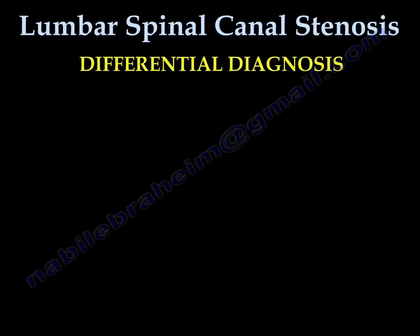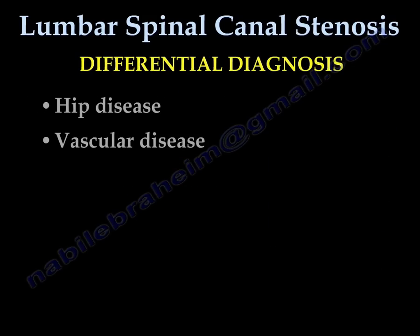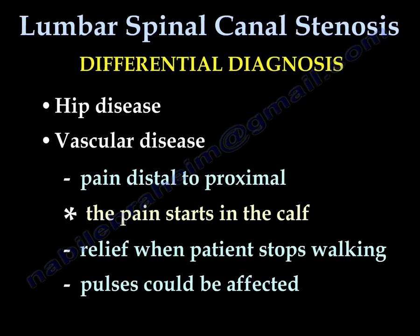The differential diagnosis for lumbar spinal canal stenosis includes hip disease or vascular disease. When there is a vascular disease, the pain starts distal to proximal — it starts in the calf or in the leg. The pain is relieved when the patient stops walking, and on examination the pulses are either reduced or absent.